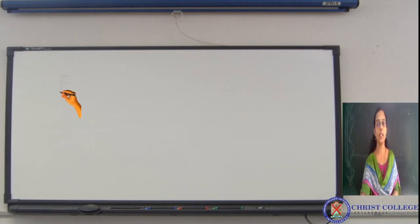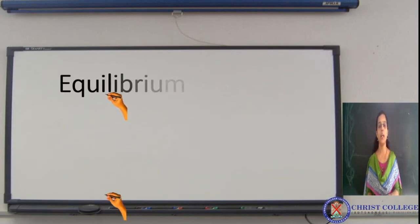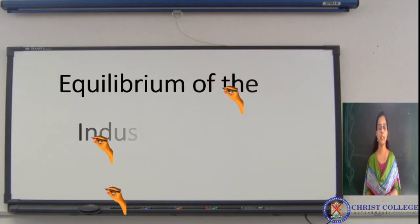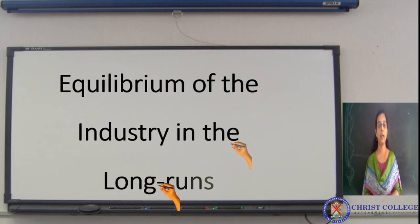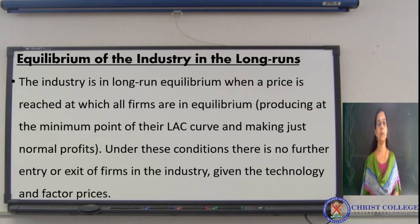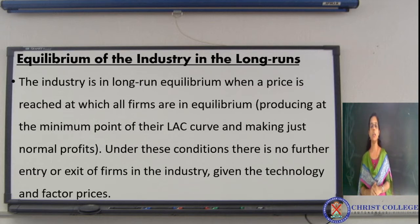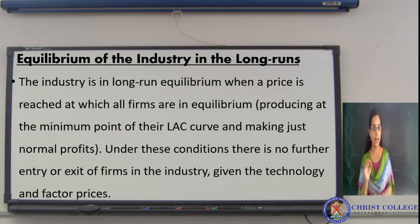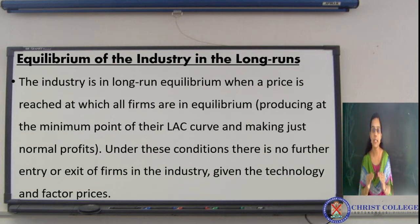The topic of today's discussion is equilibrium of the industry in the long run under a perfectly competitive market. The industry is in long-run equilibrium when the price is reached at which all firms are in equilibrium.